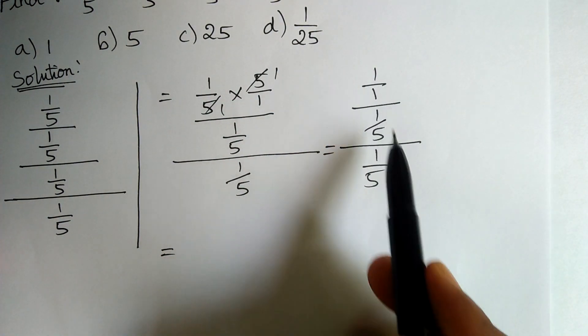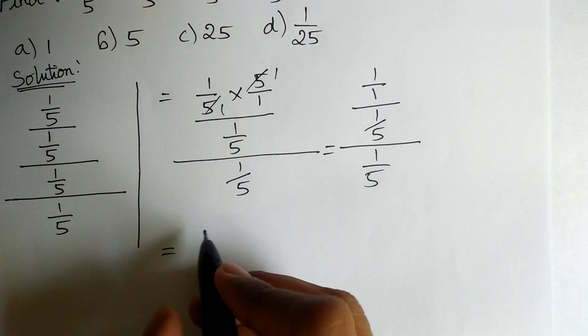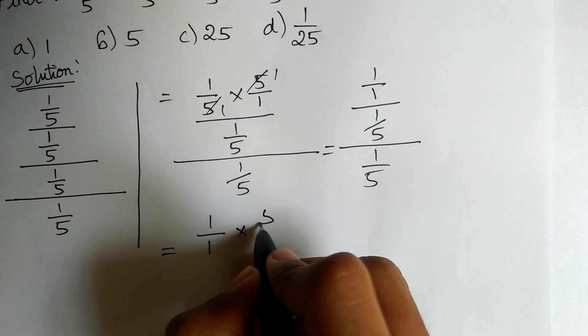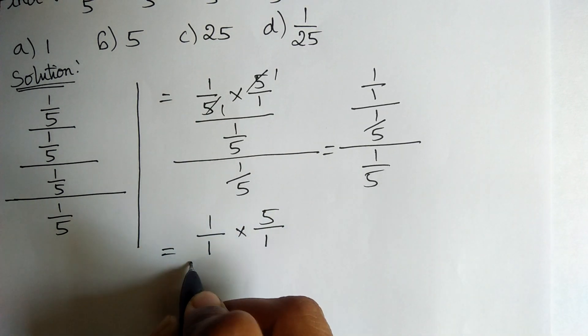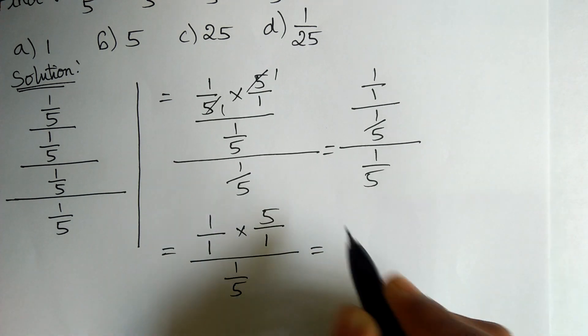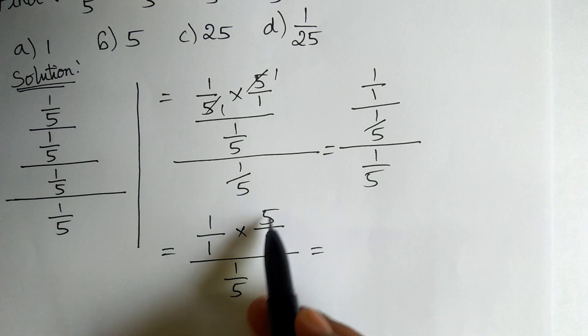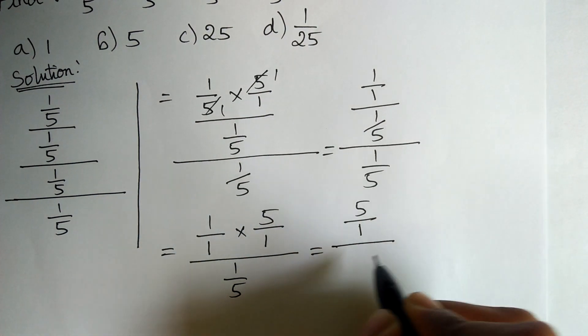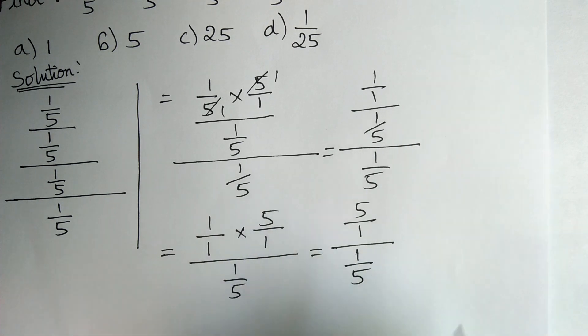Here, 1 by 1 divided by 1 by 5 can be written as 1 by 1 into 5 by 1, the whole divided by 1 by 5. Here, 1 by 5, the whole divided by 1 by 5.